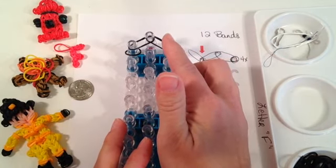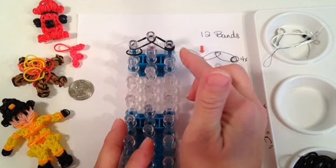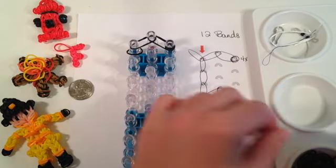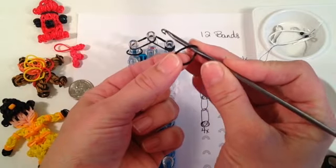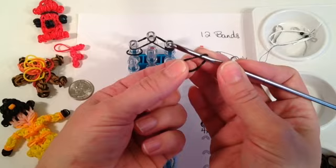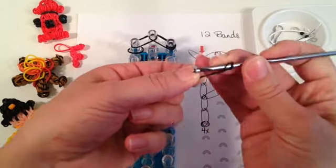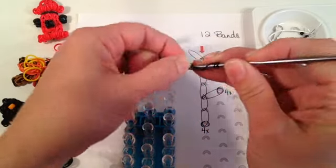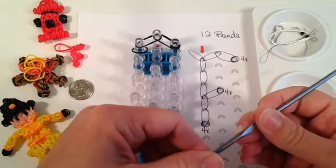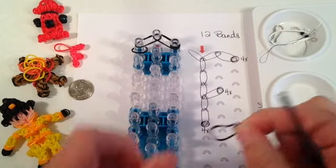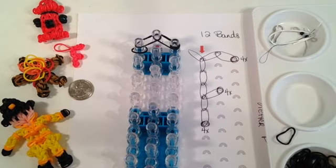If you don't feel that that is a comfortable movement for you to do the cap band, you could also take your hook, place it through your band, and wrap it around your hook four times. One, two, three, and four, and then stretch that over there for a cap band. I think that's a little bit more difficult but you can use whichever procedure you feel comfortable with.